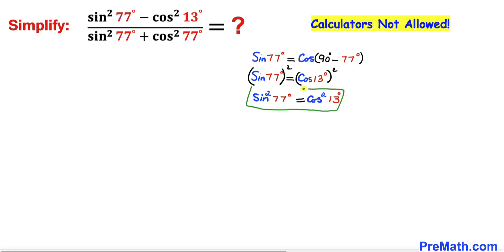Now let's focus back on our original problem. We can see that sine square of 77 degrees, I am going to replace that one by cosine square of 13 degrees. Therefore I can write cosine square of 13 degrees minus cosine square of 13 degrees divided by...